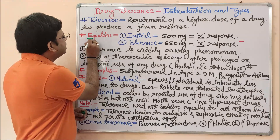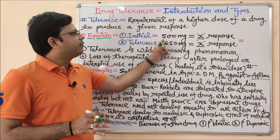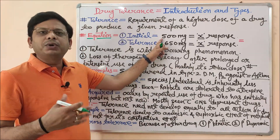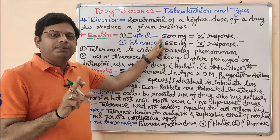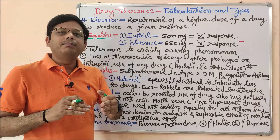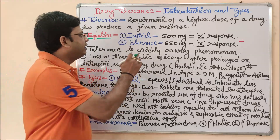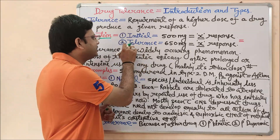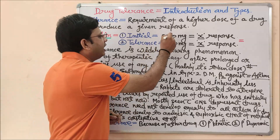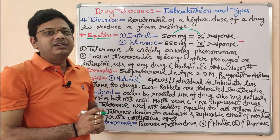Let me illustrate with an equation. Initially, without any tolerance, 500 mg of a drug — let's say paracetamol as an example, though this is not specifically applicable to paracetamol — was producing response X. But now, after continuous, frequent, or prolonged use of the same drug, to achieve the same response X you need to take 650 mg of that drug.